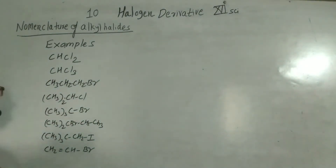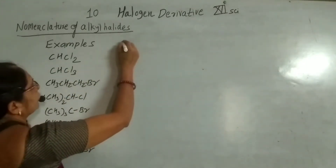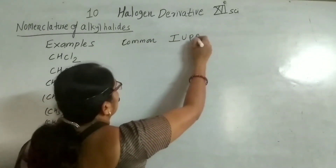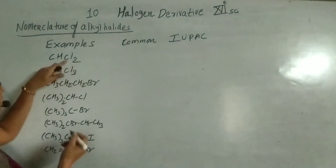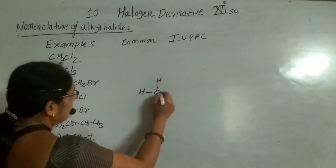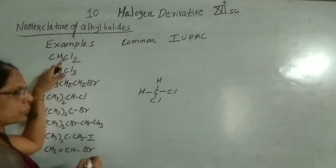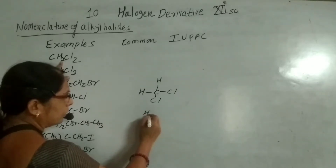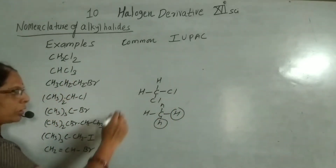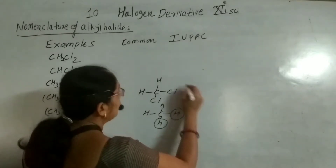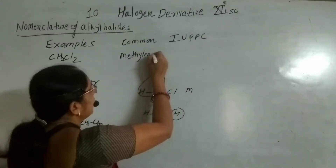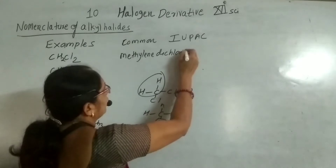First, the example of alkyl halides. The first example is CH2Cl2 — that is, a carbon having 2 hydrogens and 2 chlorines. This compound comes from methane where 2 hydrogens are replaced by 2 halogens. Its common name is methylene dichloride, because the carbon having 2 hydrogens is called methylene.